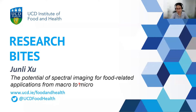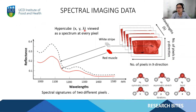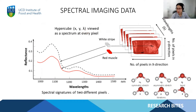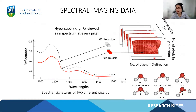Thank you so much for the introduction Paula. Today I'm going to talk about the potential of spectral imaging for food-related applications. So what is spectral imaging? Spectral imaging refers to a technique that can collect the pixel spectra and the full three-dimensional data, as we see from here.